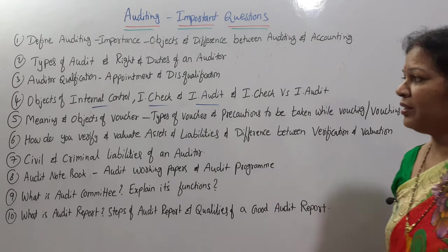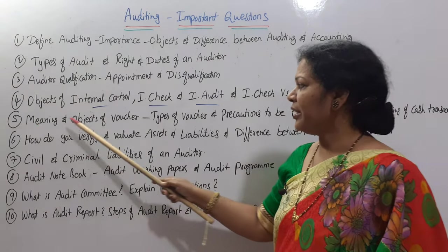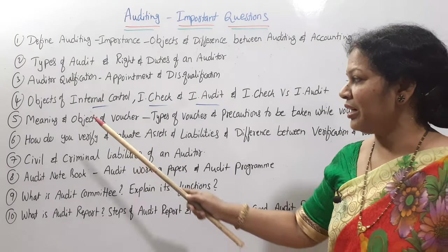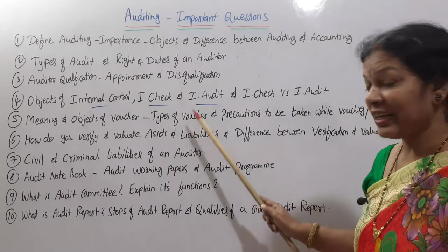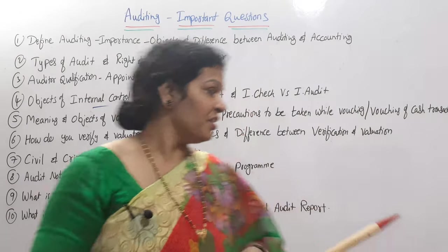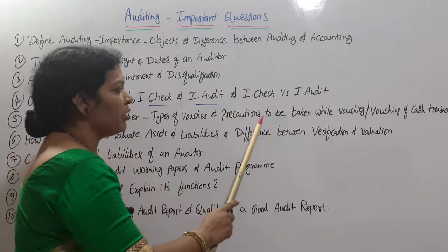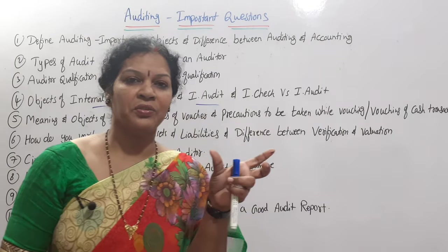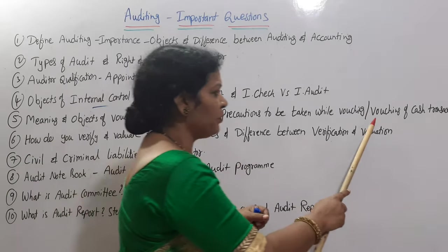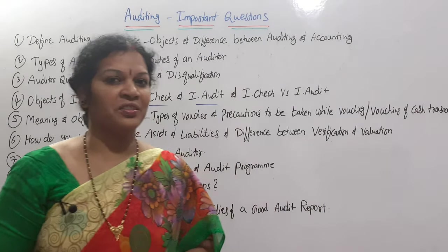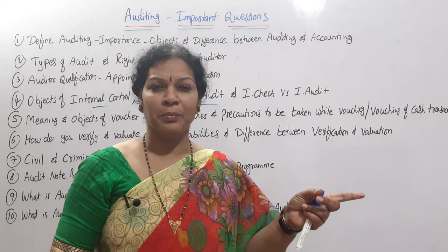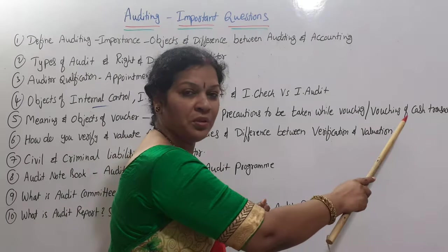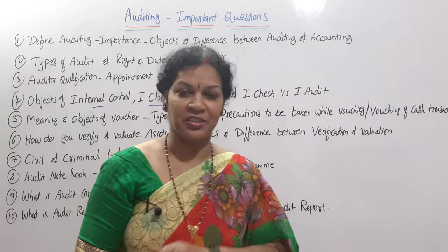Fifth question: meaning and objects of vouching, types of vouching, and precautions to be taken while vouching. Out of the different types of vouching of transactions, vouching of cash transactions is especially important. Also covered are vouching of purchase book and vouching of sales book — don't skip vouching of cash transactions.